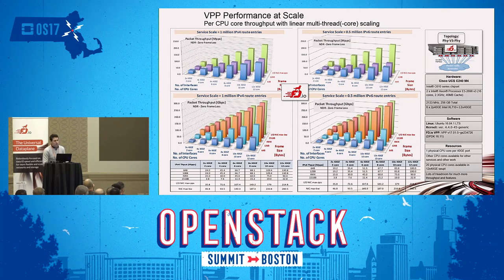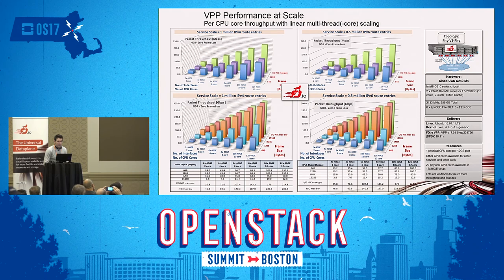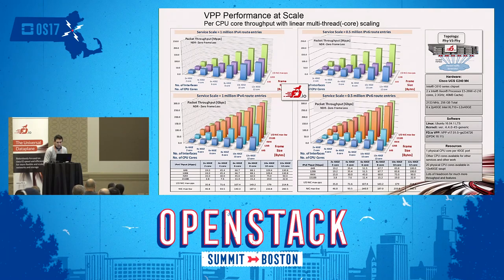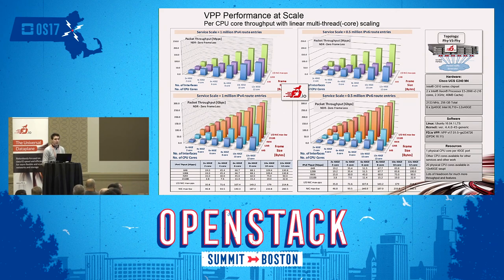This is VPP performance data from the CSIT project — another FD.io project for continuous system integration and testing — showing the scaling of VPP. On the left side is one million entries for IPv4, on the right is IPv6 with half a million entries. The scaling across interfaces and cores is almost linear, and the limit here is the bandwidth of the NICs and PCI, not VPP or the cores. This was running on a dual-socket Intel E5 system with 256 GB of memory and six Intel XL710 dual-port 40G NICs.